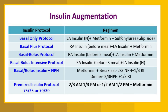Next is the basal-bolus intensive protocol, where metformin is removed and rapid-acting insulin is given before three meals along with long-acting insulin at night. Then comes the basal-bolus insulin with NPH: because rapid-acting insulins can be costly, doctors sometimes prefer NPH given twice daily, with metformin, NPH acting as basal insulin and regular insulin acting as bolus. Two-thirds is given as basal and one-third as bolus — a more complex regimen, so not preferred as often.